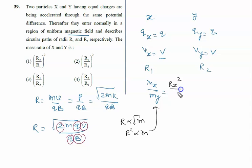rx squared upon ry squared. So rx is r1, therefore it is r1 upon r2 whole squared. The right answer to this problem will be option 2, that is (r1/r2)².